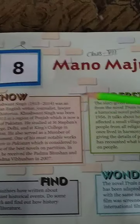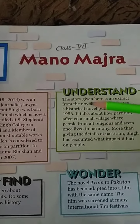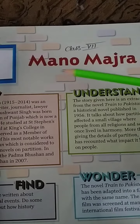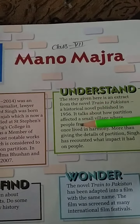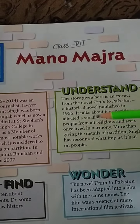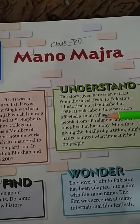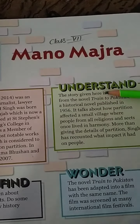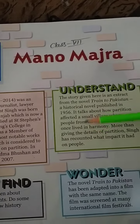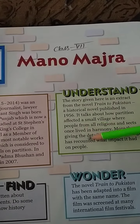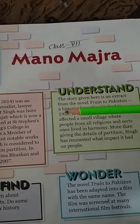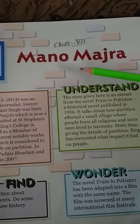His novel is 'Train to Pakistan', which has four parts. We are going to read the third part, Manu Mazra. This part of the story is set at the time of India-Pakistan partition. In this chapter, we will read about what kind of changes happened after partition and how people lived through it.